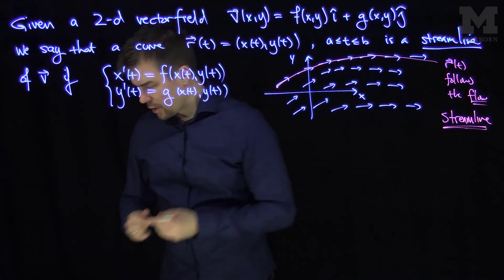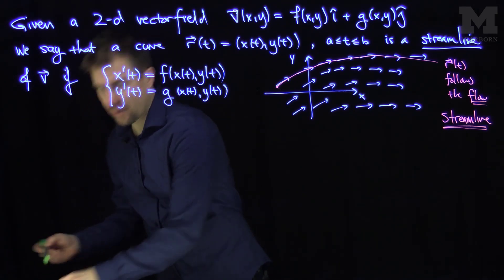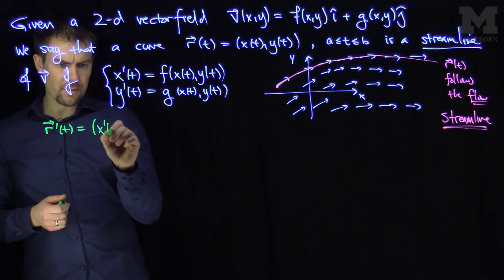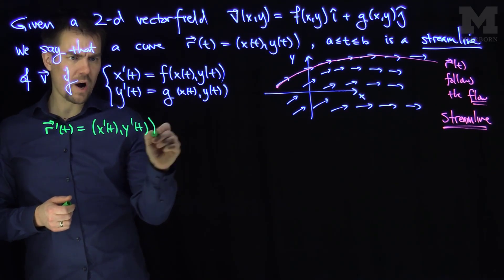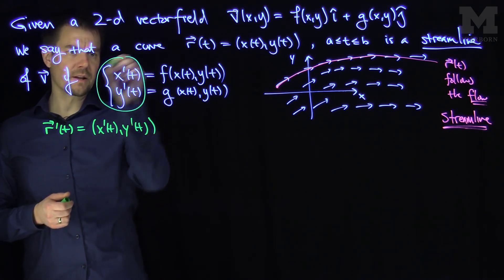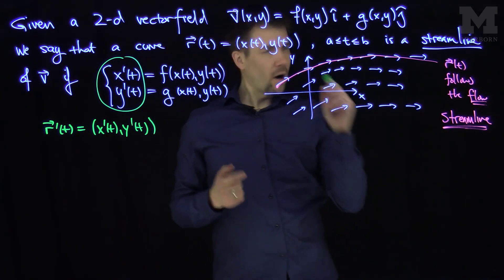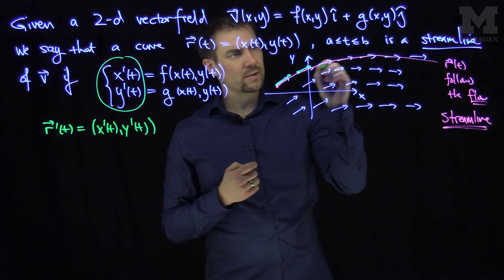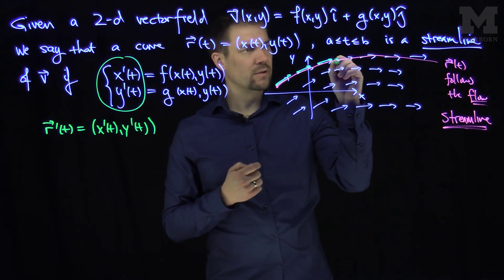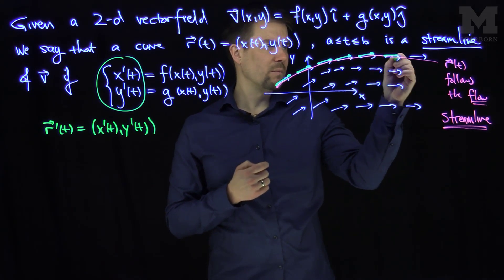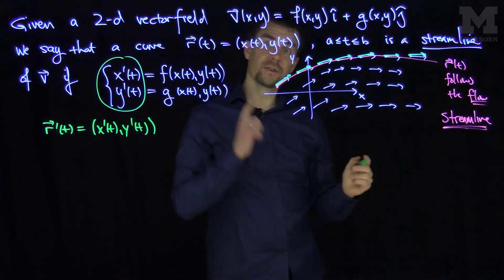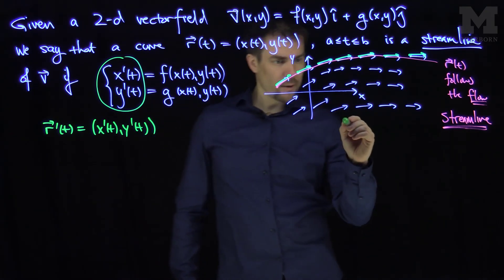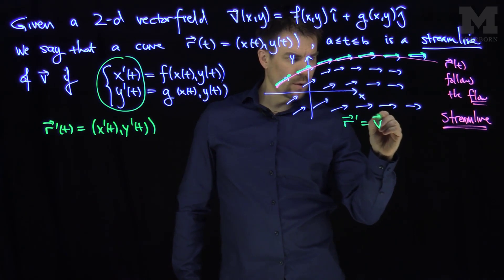What characteristic does r prime have? r prime of t is just (x prime(t), y prime(t)), which is the left-hand side of our equations. r prime is the tangent vector to the curve. The tangent vectors at each point along the curve align with the vector field vectors at those points — so roughly, r prime equals V.